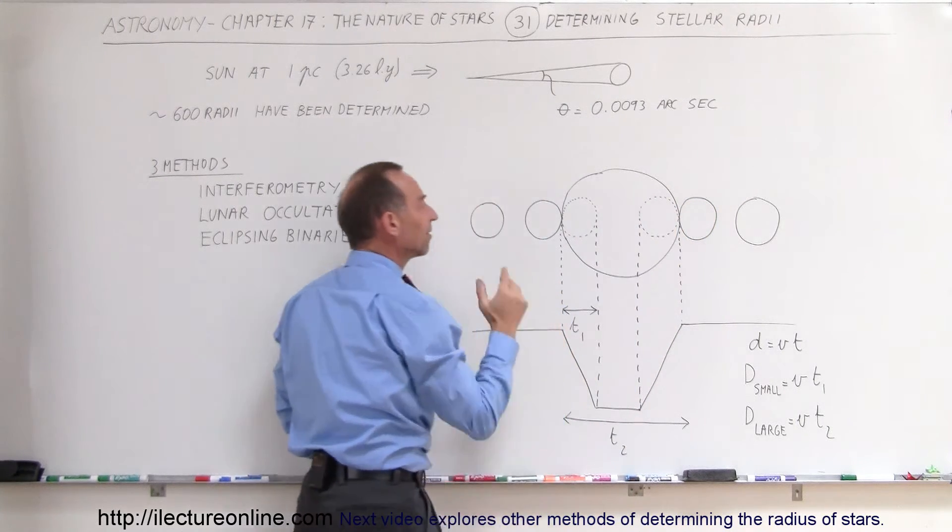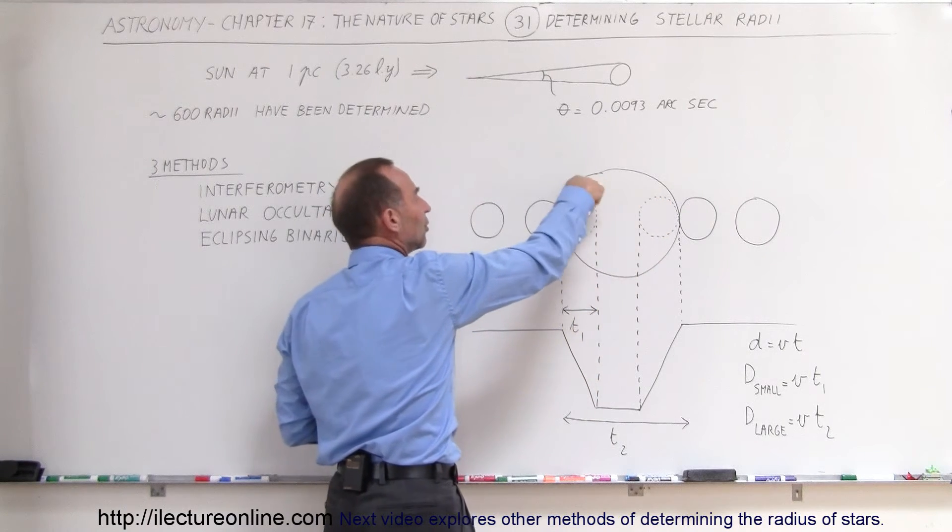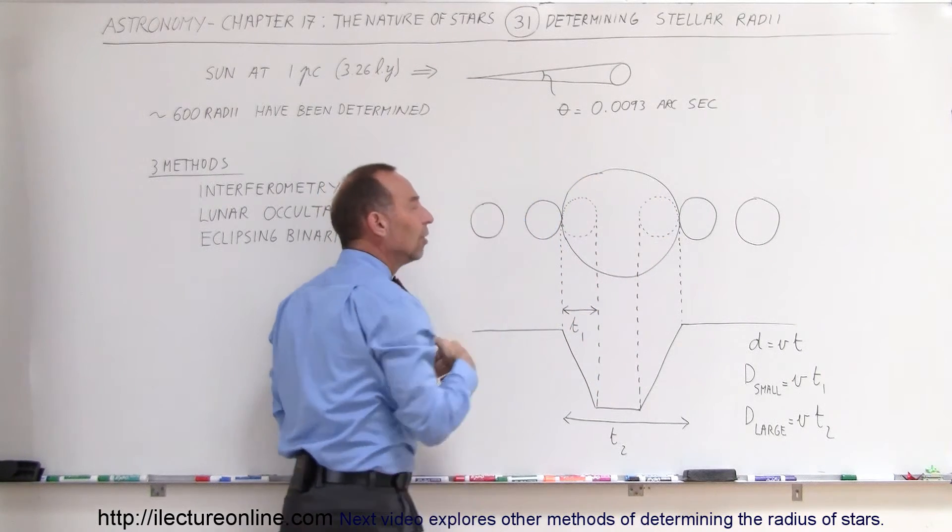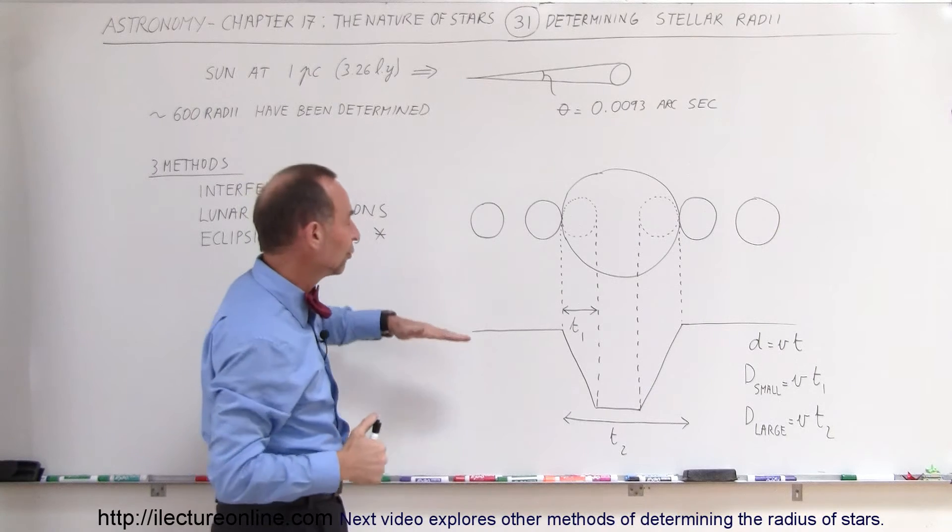At the same time, when it comes over on the other side, it will start reappearing again, so we have what we call a light curve that changes.